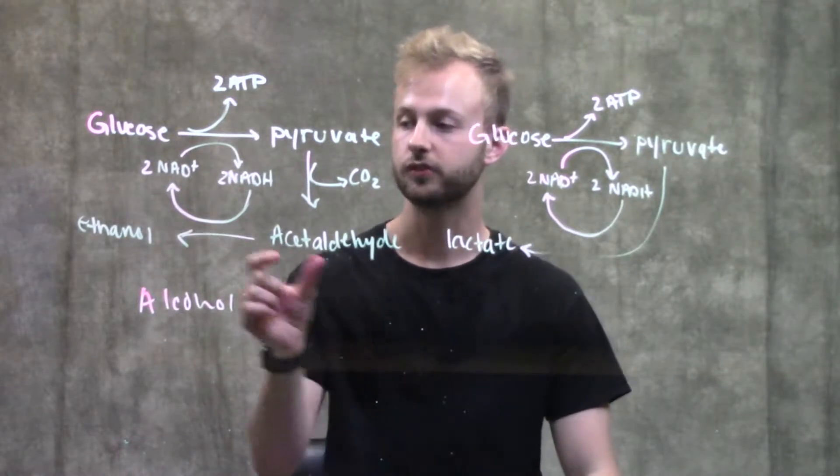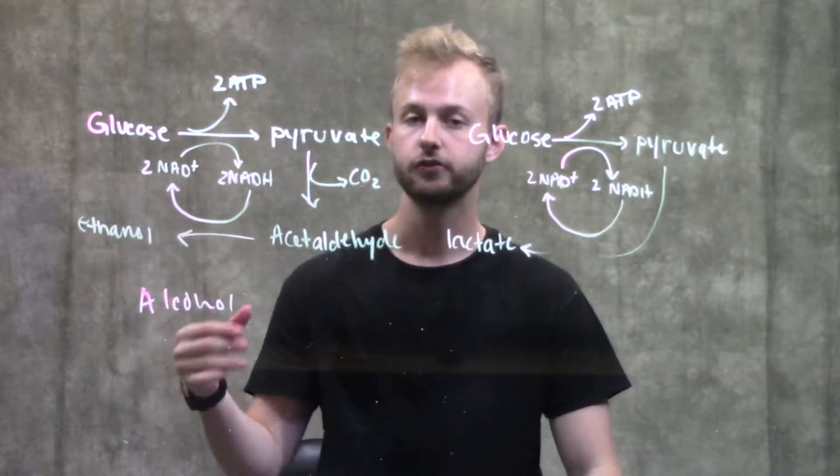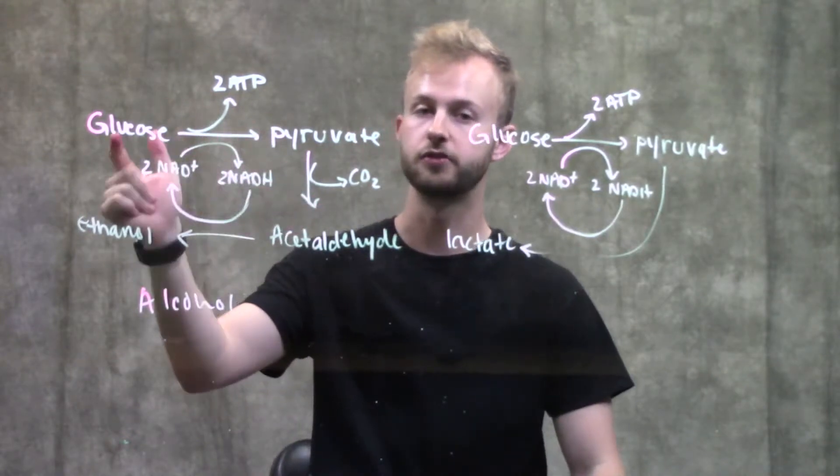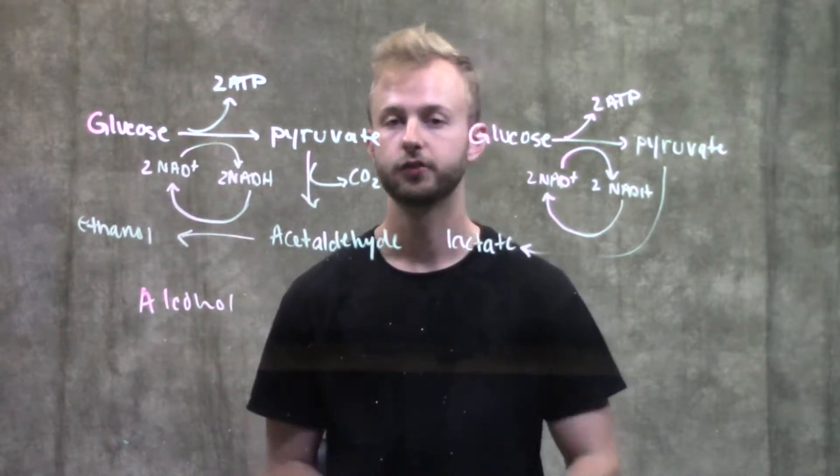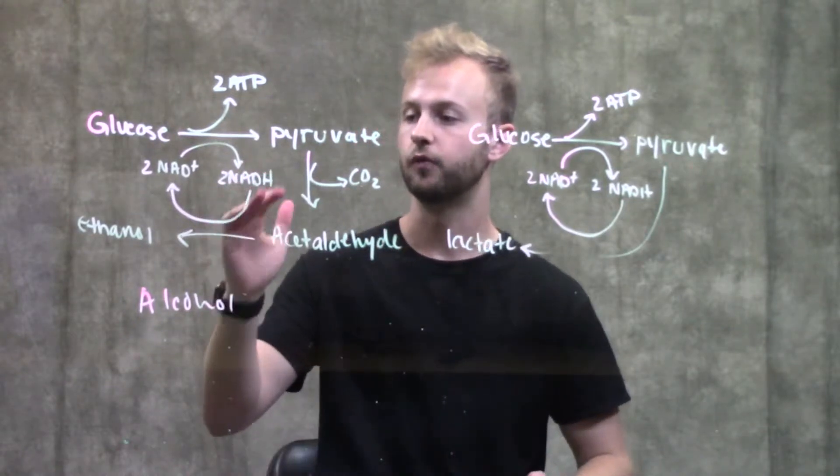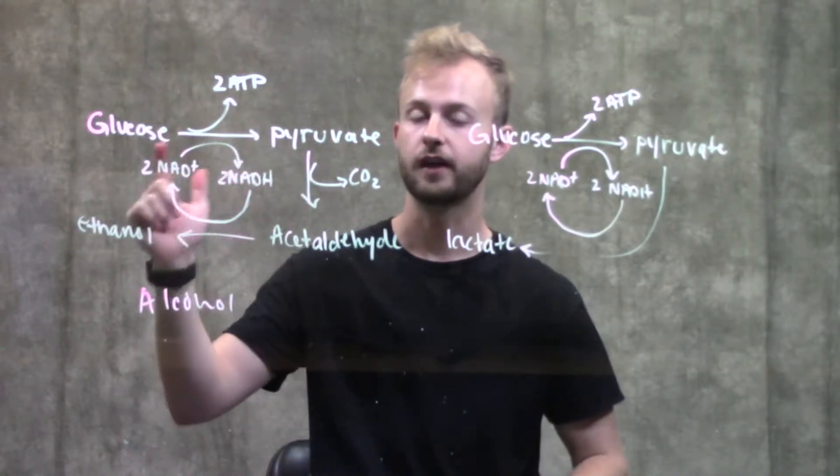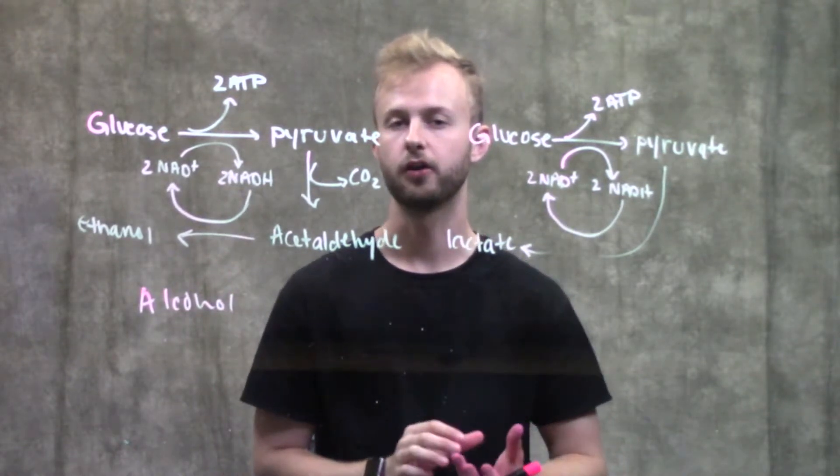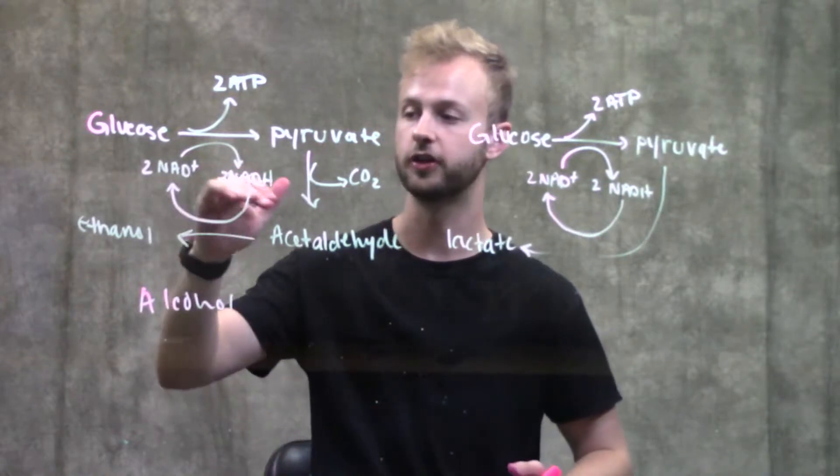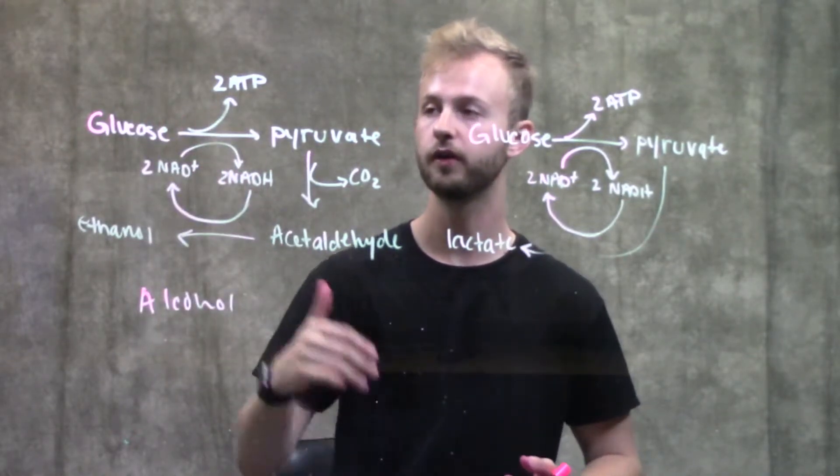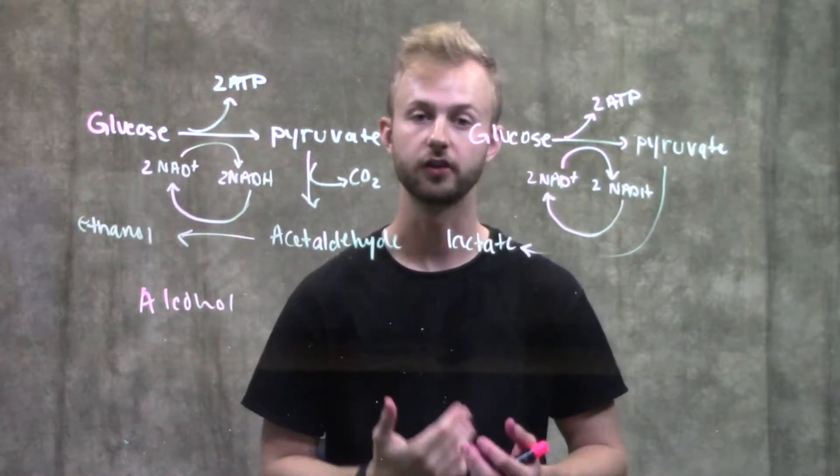This acetaldehyde can be reduced to form ethanol. We use the two NADHs produced in glycolysis to reduce the acetaldehyde. When we use those two NADHs, they regenerate NAD+ that glycolysis can reuse to generate more ATP. The most important part of fermentation is the regeneration of NAD+ so that glycolysis can continue to run forward and produce more ATP for our cells.